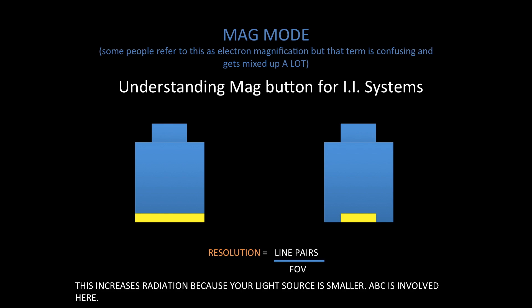The other important aspect of magnification mode is that because you have a smaller light source you will need to increase the radiation dose to the patient. This is usually done automatically nowadays by the ABC system. ABC stands for automatic brightness control, and that brightness control is a light sensor that will detect the need for increased radiation — an increased number of photons — usually achieved by increasing your mA, but it can also increase kVp. Be aware that there is an increase in radiation anytime you're doing magnification.